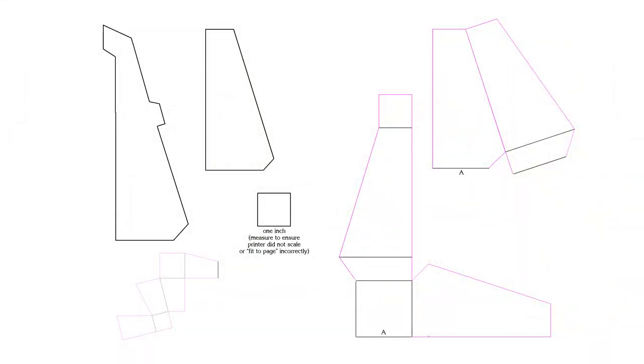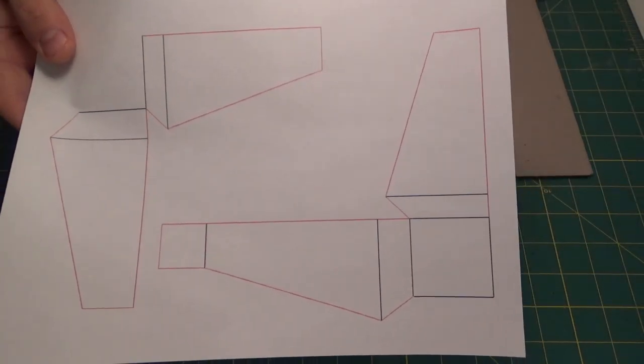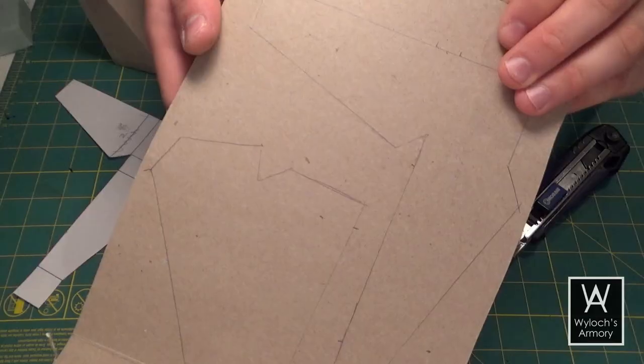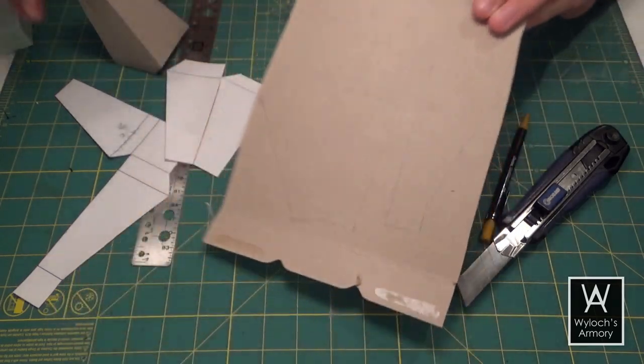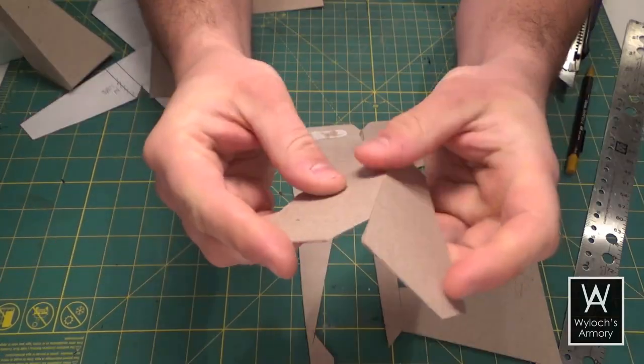Start with the big one that's in two pieces. Trace and cut out these pieces from cereal box and lightly score along all the internal lines to make them fold easier. Make four copies.